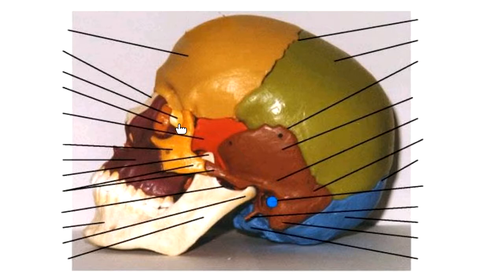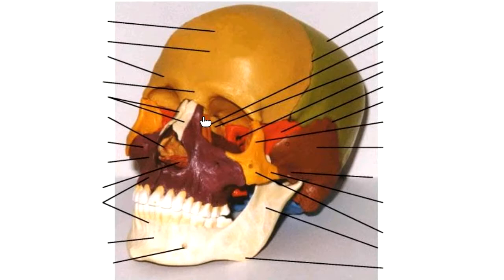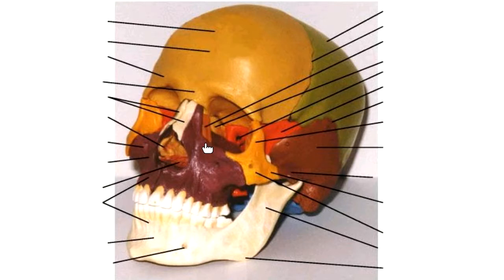The facial bones begin with the maxillary bones — your upper jaw bones — two of them that fuse together. You can feel that fusion along the roof of your mouth. Your cheek bones are the zygomatic bones, one on each side. The lacrimal bone is on the back side of the nose, inside the orbit of the eye. That bone has a groove where we drain our tears down into our nose — that's why our nose runs when we cry.